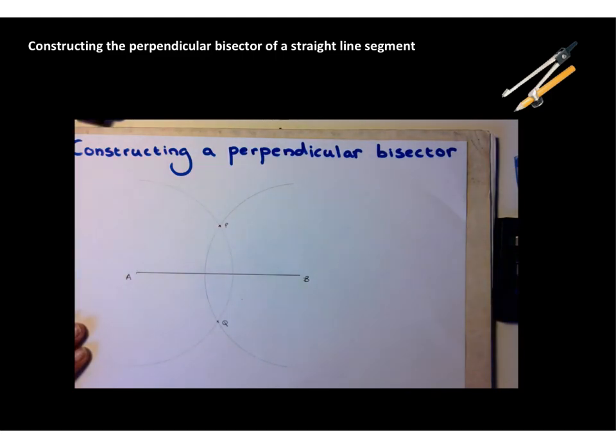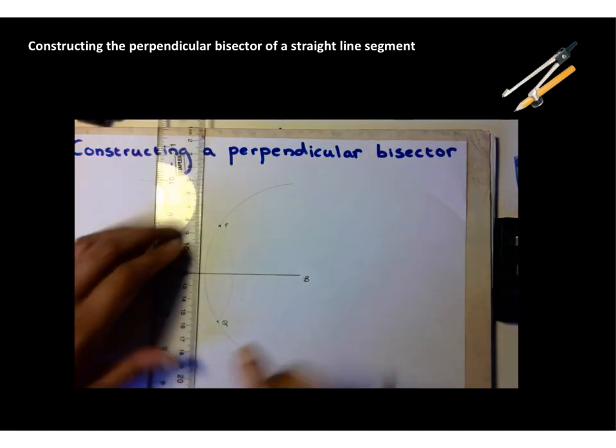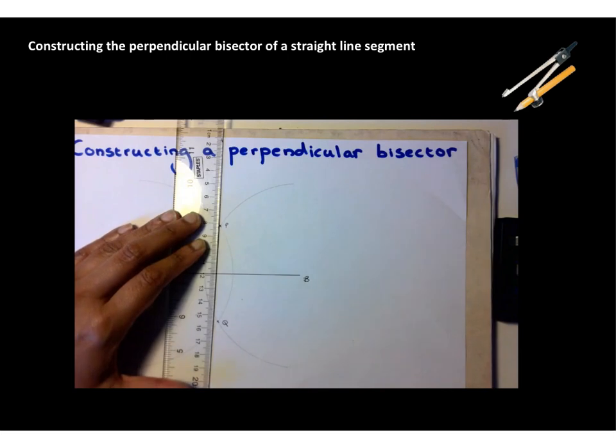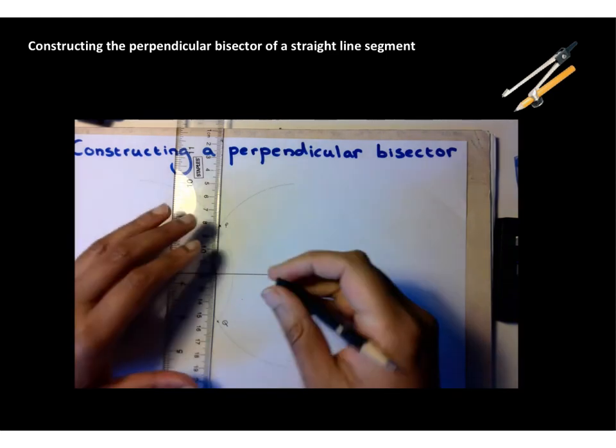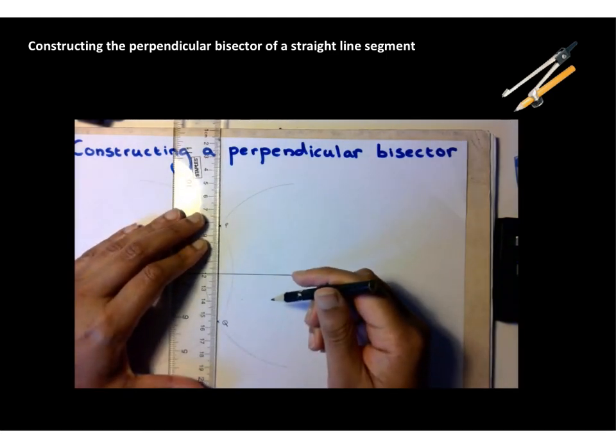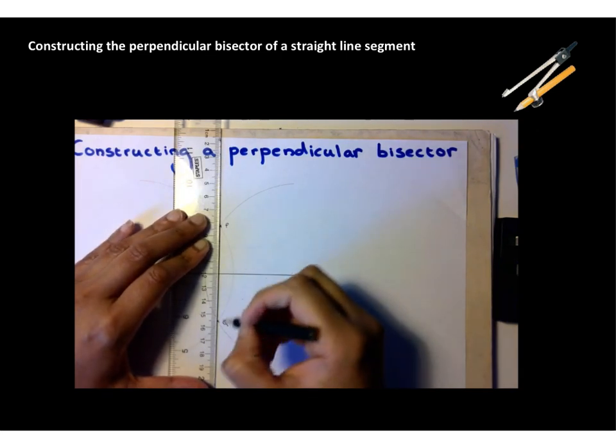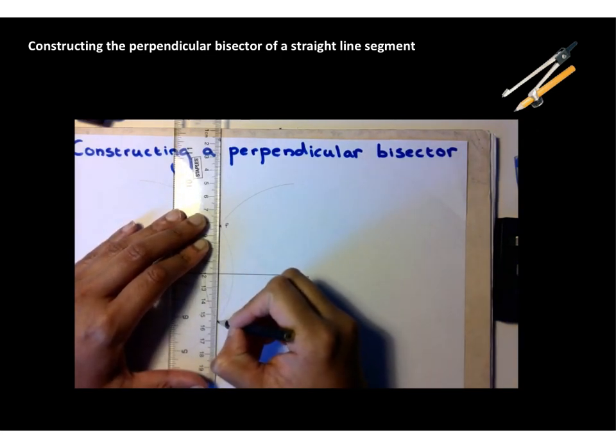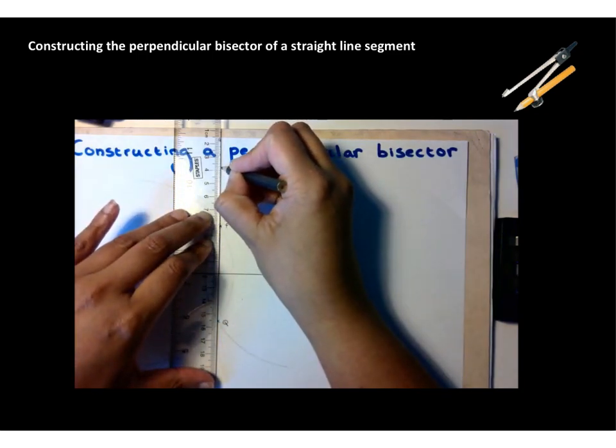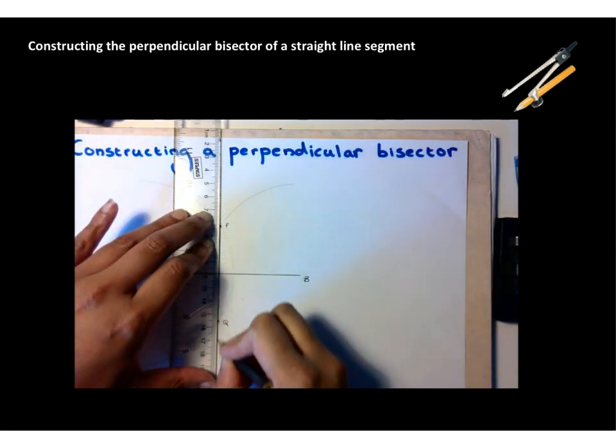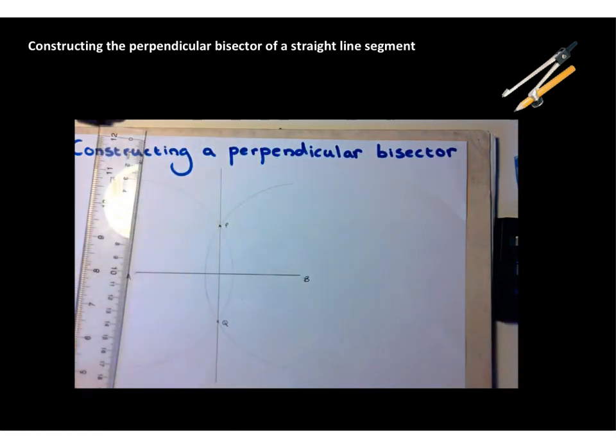I'm going to take a ruler, and I'm going to join up P and Q very, very carefully. The more accurately you do this, the better and more accurate your perpendicular bisector will be. Use a sharp pencil as you do this, try and draw your line straight through points P and Q.